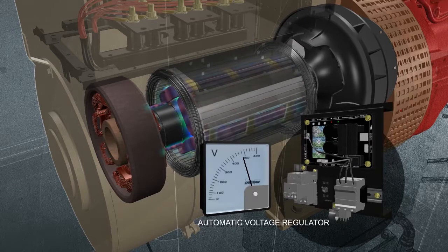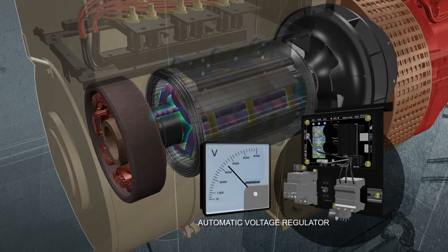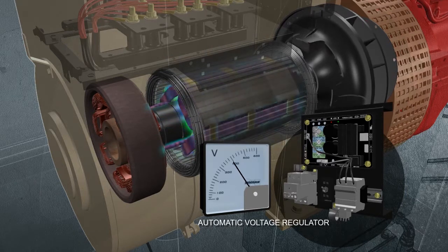During heavy power demands, voltage decreases, causing the AVR to increase the magnetic field. Conversely, when power demands are low, the AVR tempers the field.